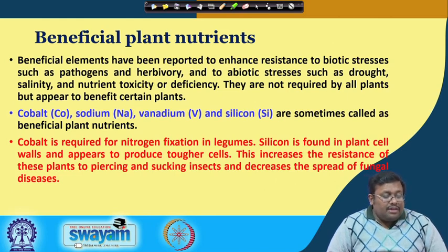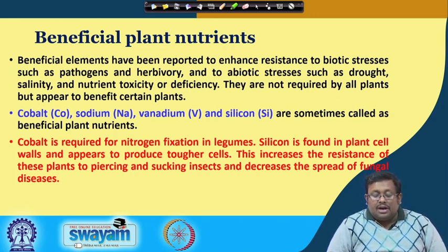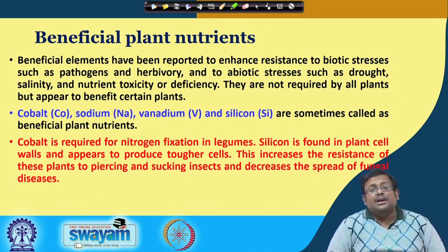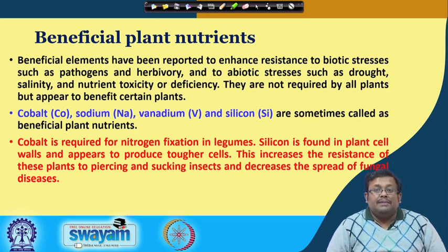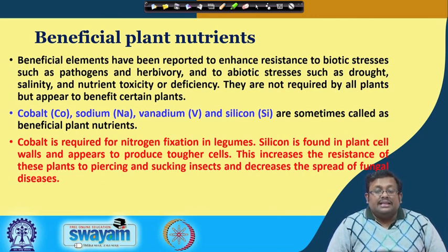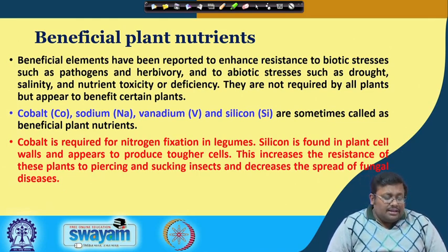There are 4 to 5 beneficial plant nutrients: cobalt, sodium, vanadium, and silicon. Cobalt is required for nitrogen fixation in legumes. Silicon is found in plant cell walls and appears to produce tougher cells, helping protect the cells by making the plant cell wall more sturdy, increasing resistance to piercing and sucking insects and decreasing the spread of fungal diseases.